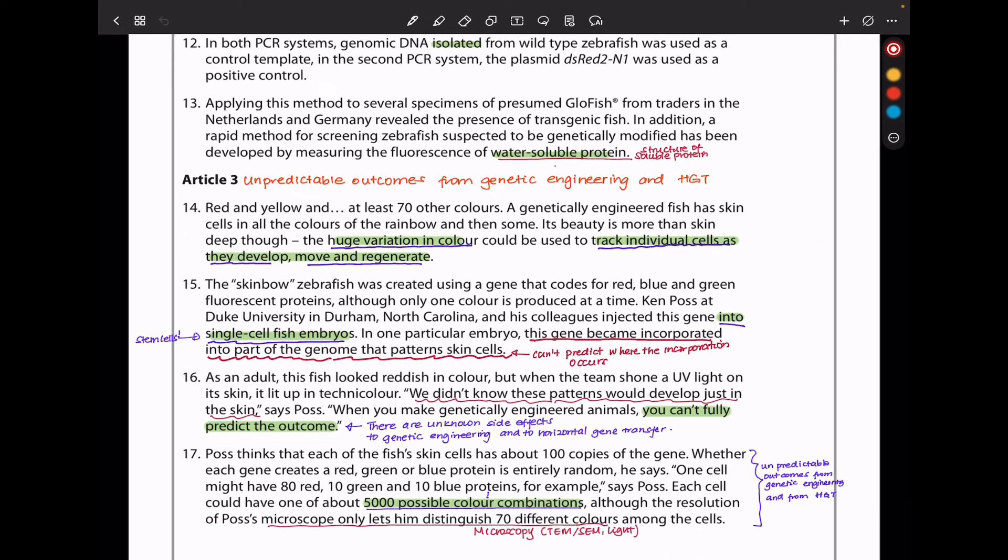This is focusing on the unpredictable outcomes from genetic engineering, as well as horizontal gene transfer. Red and yellow and at least 70 other colors. A genetically engineered fish has skin cells in all colors of the rainbow and then some. Its beauty is more than skin deep though. A huge variation in color could be used to track individual cells as they develop, move and regenerate. The skinbow zebrafish was created using a gene that codes for red, blue and green fluorescent proteins. Although only one color is produced at a time,